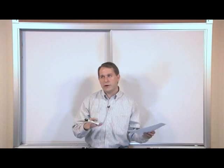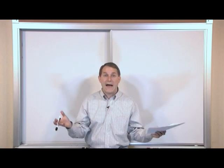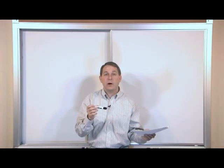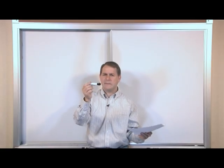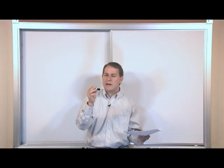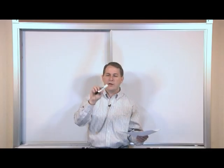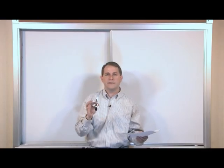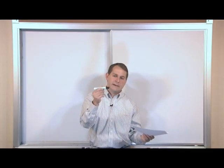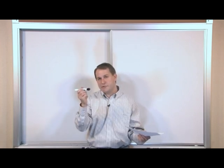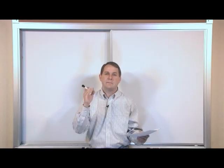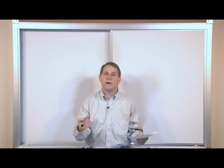Everything around you has mass. This marker has mass — I can put it on a balance and figure out what its mass is, maybe around six grams. But this marker also has a volume associated with it. It's basically a cylinder, so I know the radius and the length, and I can calculate the volume. So I know its mass, because I can measure that, and I know its volume, because I can measure that too. And if you take the mass and divide it by the volume, you get what we call density — it's mass per volume, or mass divided by volume.